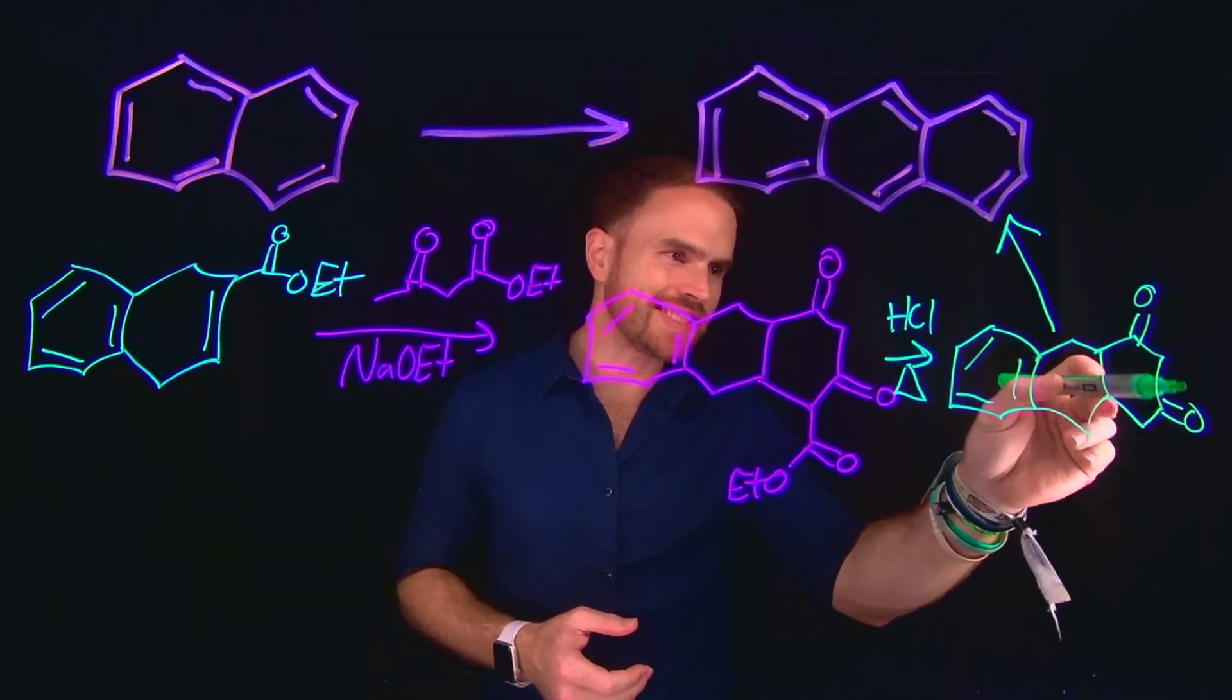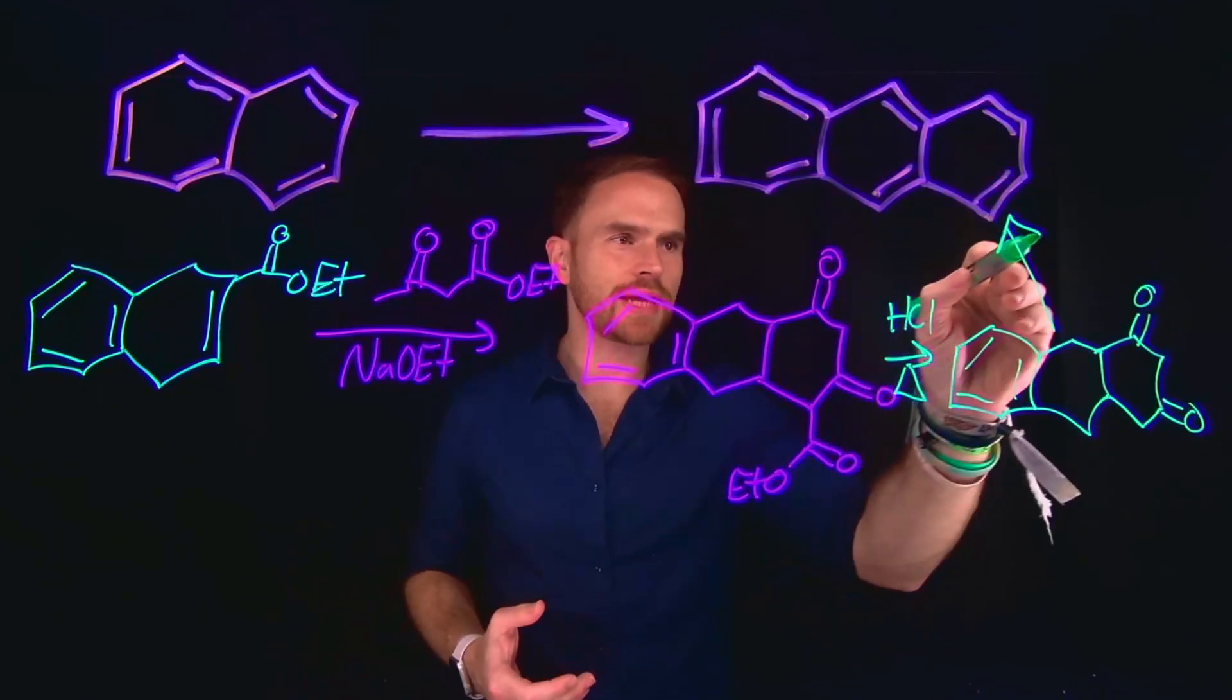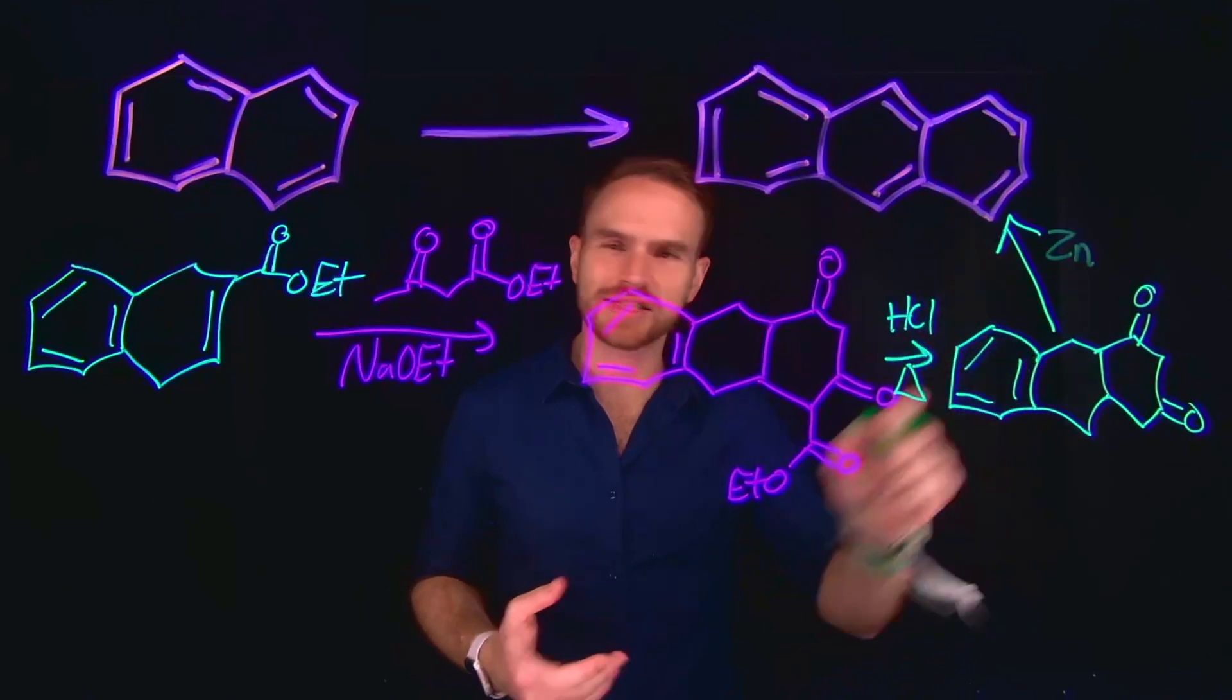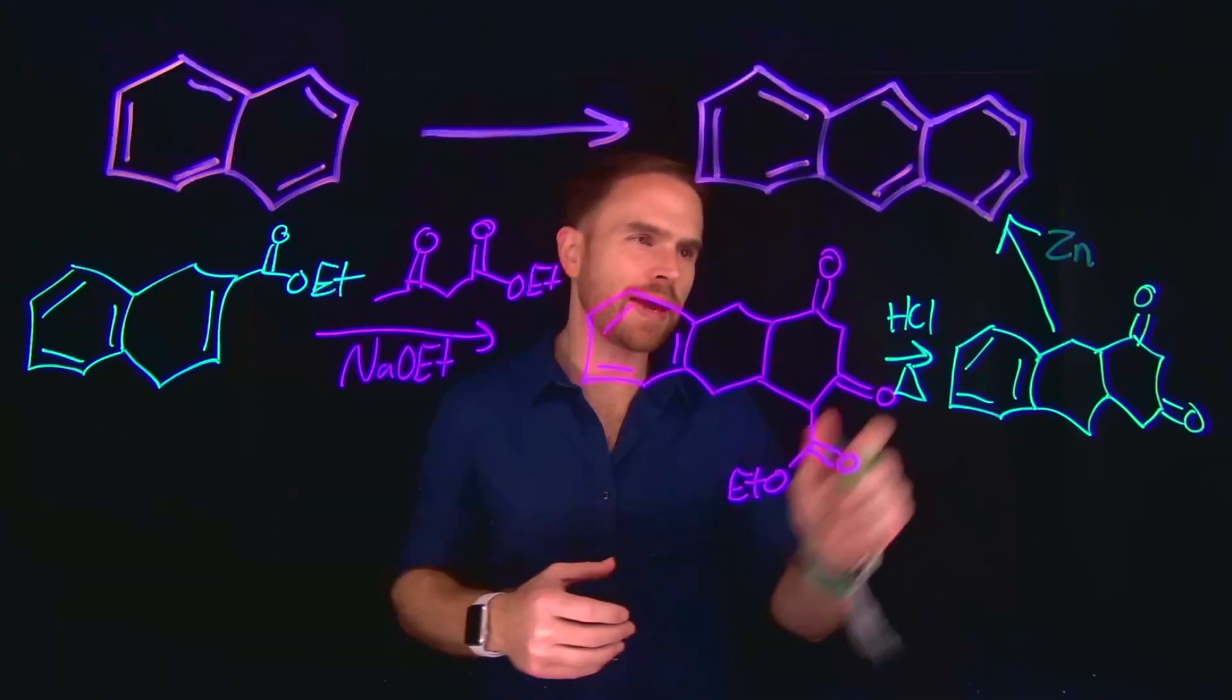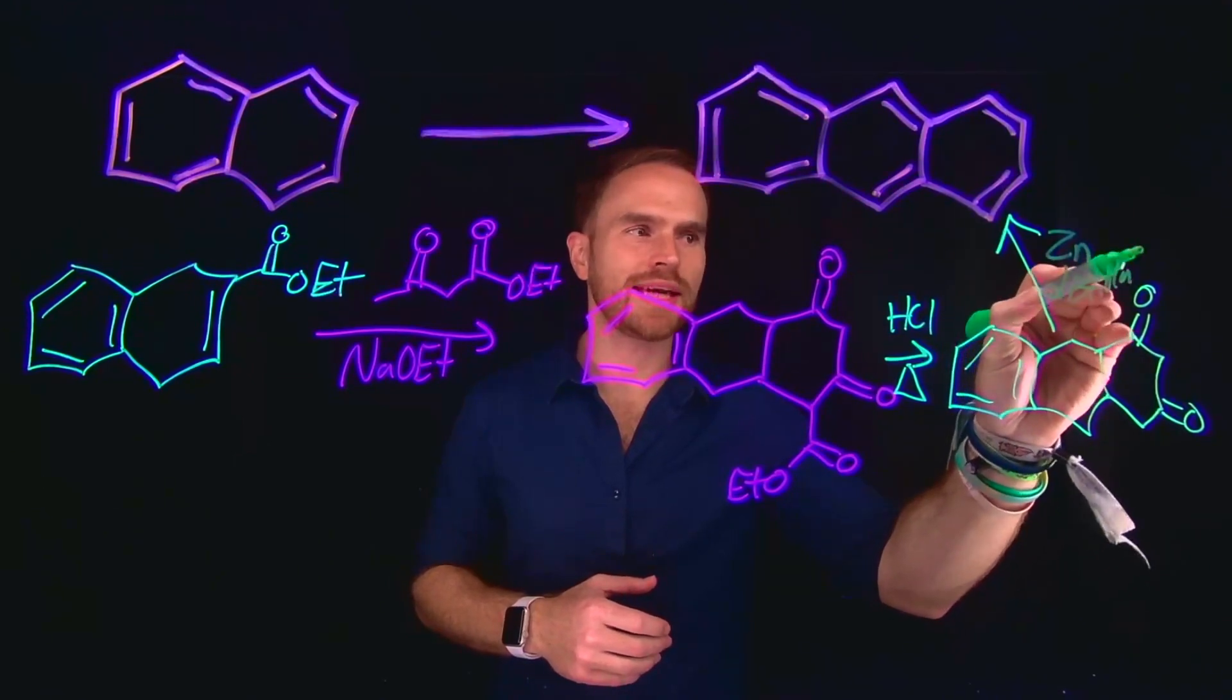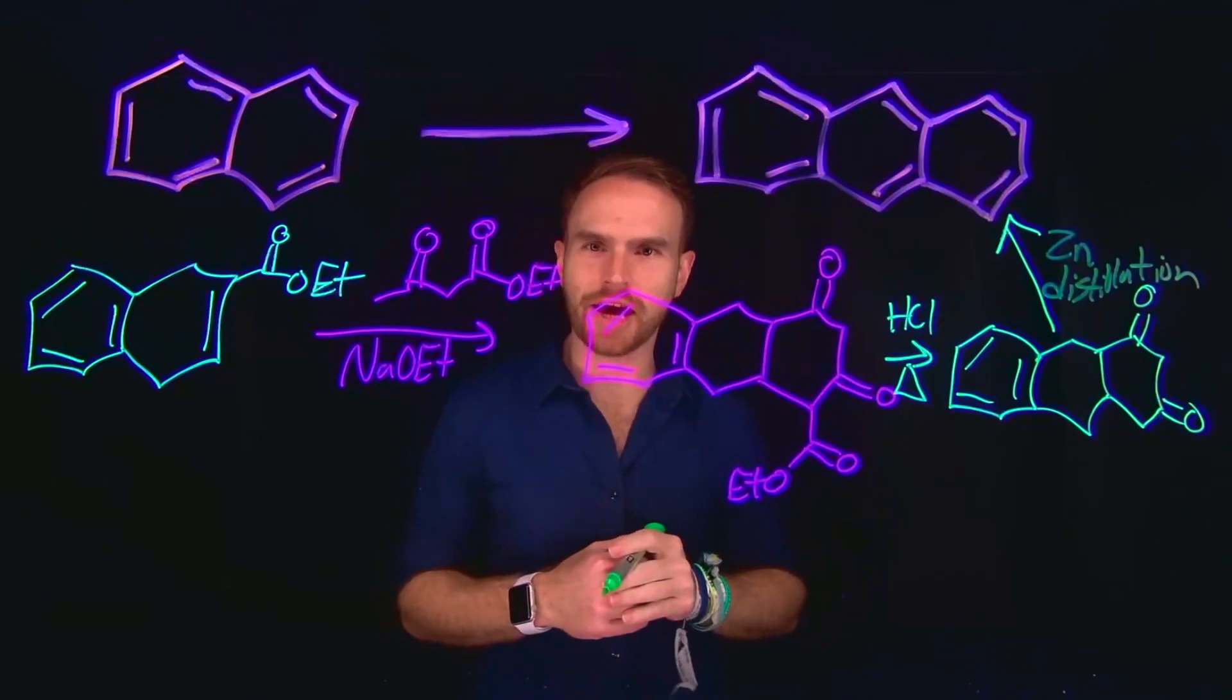It turns out that we can deoxygenate it in order to form anthracene by simply adding zinc dust and doing a distillation in the presence of zinc. This is a very advanced reaction. Unless you've taken a more advanced organic synthesis class, you may not have seen this reaction where you do a zinc distillation in order to deoxygenate this anthraquinone to form our anthracene compound.